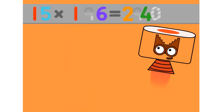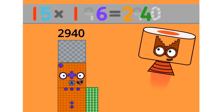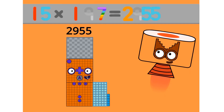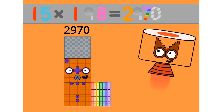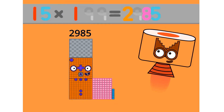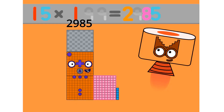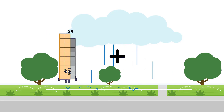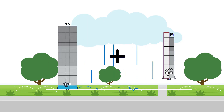15 x 151 equals 2265. 15 x 152 equals 2280. 15 x 153 equals 2295. 15 x 154 equals 2310. 15 x 155 equals 2325. 15 x 156 equals 2340. 15 x 157 equals 2355. 15 x 158 equals 2370. 15 x 159 equals 2385. 15 x 160 equals 2400.